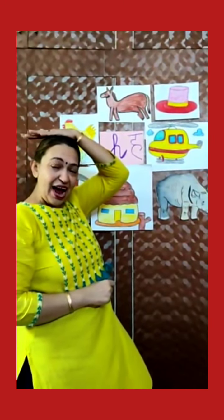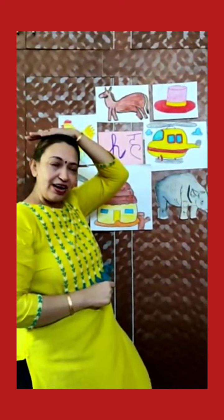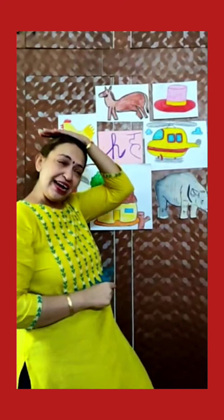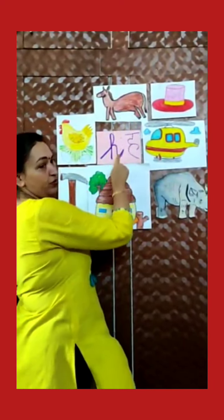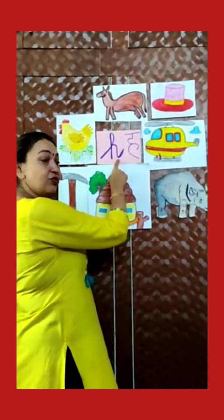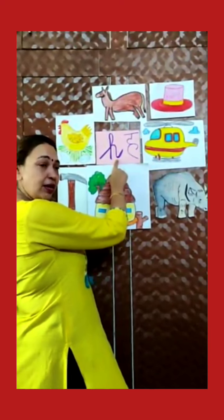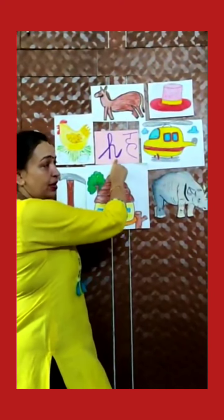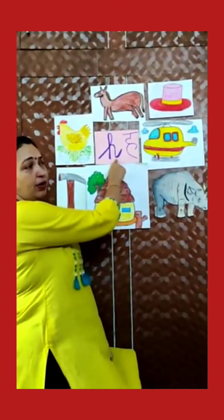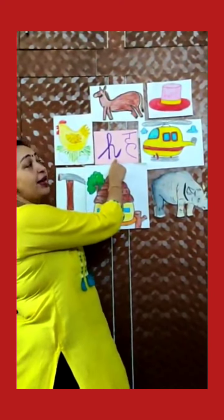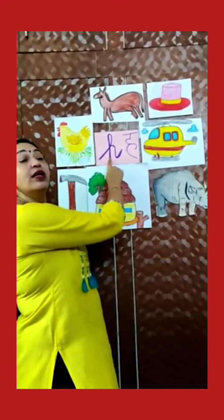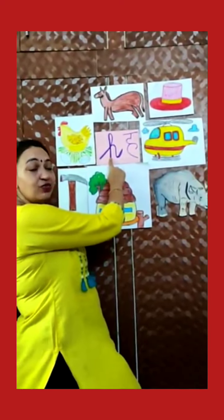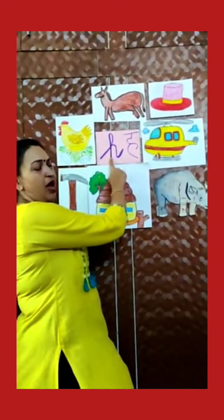We wear a hat on our head. H for horse. Horse is a domestic animal. Domestic animal means an animal that can help us. Horse is used for riding. H for horse is used for riding.